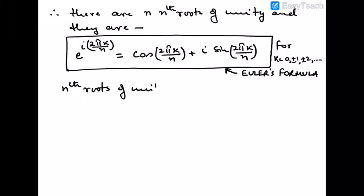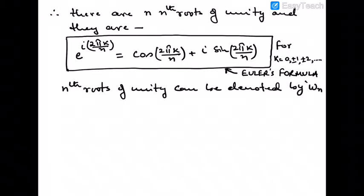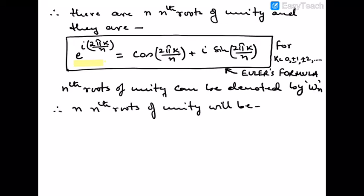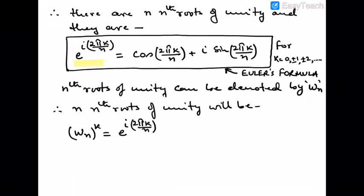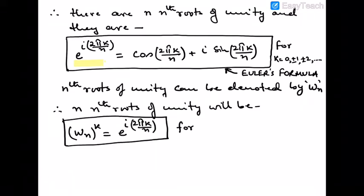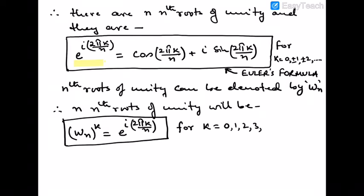The nth roots of unity can be denoted by ωₙ — it looks like 'w' but it's omega. So the nth root of unity is ωₙ^k = e^(i·2πk/n) for k = 0, 1, 2, 3, up to n − 1.